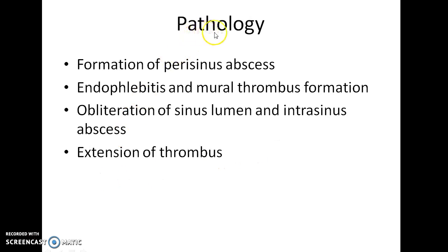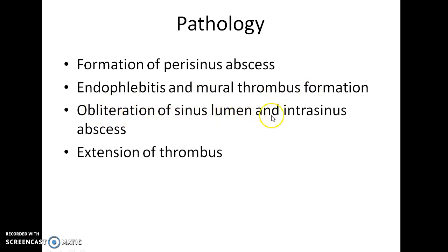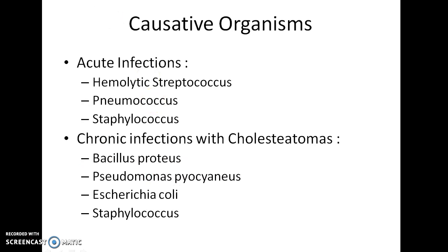The pathology of this disease includes four stages. The first stage is the formation of perisinus abscess. The second stage is endophlebitis and mural thrombus formation. It is followed by obliteration of the sinus lumen and intrasinus abscess. The last stage is the extension of the thrombus.